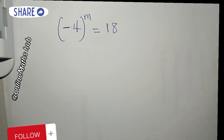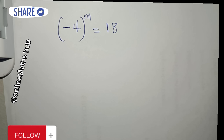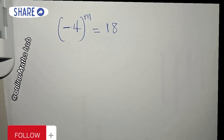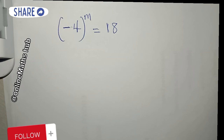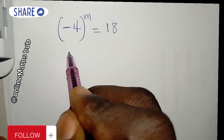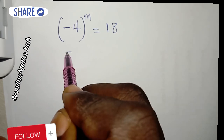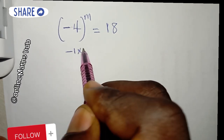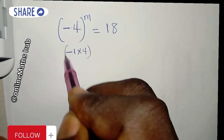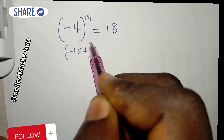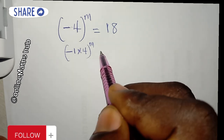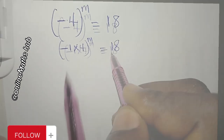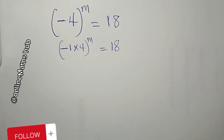Having said that, let's now proceed. The first step is to split the minus 4. I can write minus 4 as minus 1 times 4, so I have (minus 1 times 4) to the power m, equal to 18.